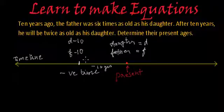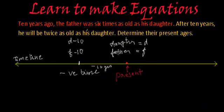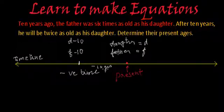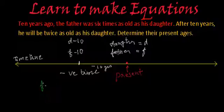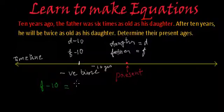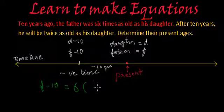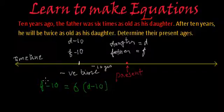What is their relation 10 years ago? The father was 6 times as old as his daughter. So father's age 10 years ago was F minus 10, and this was 6 times his daughter's age 10 years ago, which is D minus 10. So the first equation is: F minus 10 = 6 times (D minus 10).